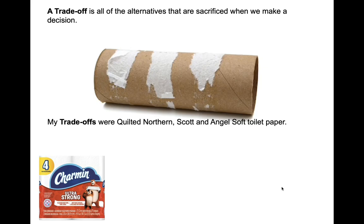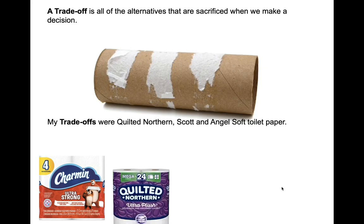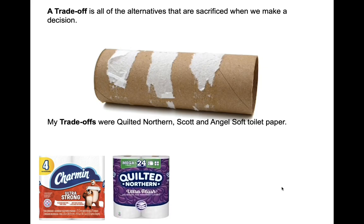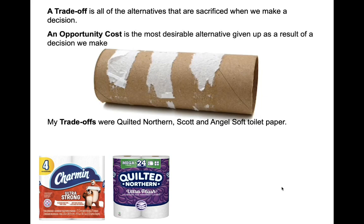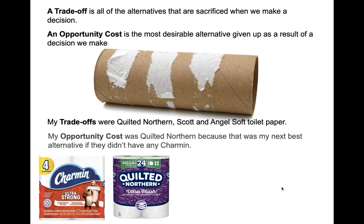If they didn't have Charmin, I would have taken Quilted Northern. So in that case, Quilted Northern becomes my opportunity cost. An opportunity cost is the most desirable alternative given up as a result of a decision we make. My opportunity cost was Quilted Northern because that was my next best alternative.